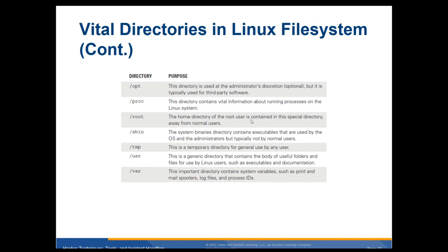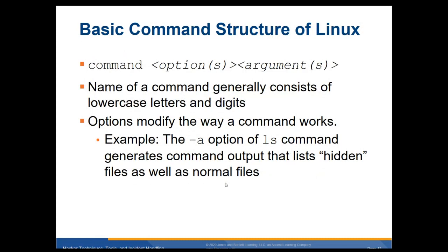/proc is for processes. /root is the home directory for the root user, which is separate from the /home directory. /sbin is the system binaries directory and contains executables used by the OS and administrator — typically not by normal users. /tmp is for temporary files. /usr is a generic directory containing useful folders and files for Linux users such as documentation and executables. /var is important for print and mail spoolers and log files.